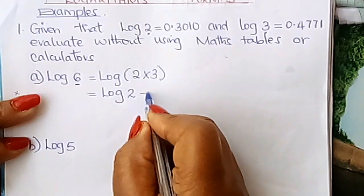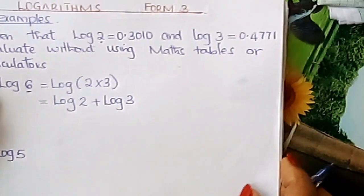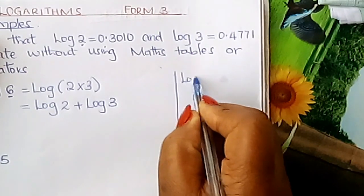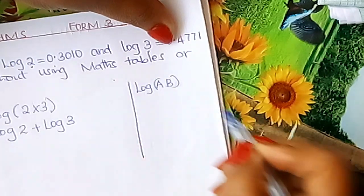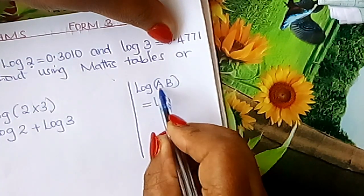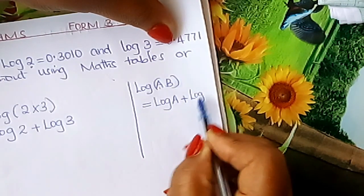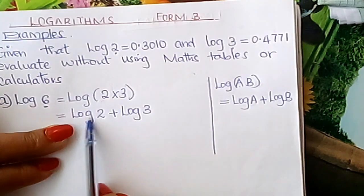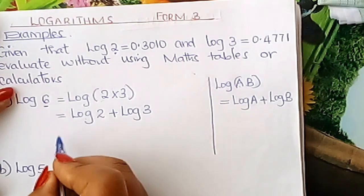What do I mean by this learner? This is a law of logarithms. If you have log A times B learner, A times B, it is equal to log A added to log B. That is what I've applied here. Log 2 times 3 learner is the same as log 2 plus log 3.